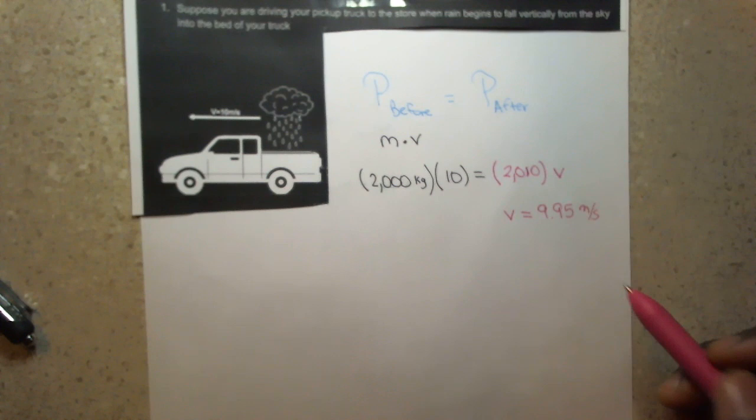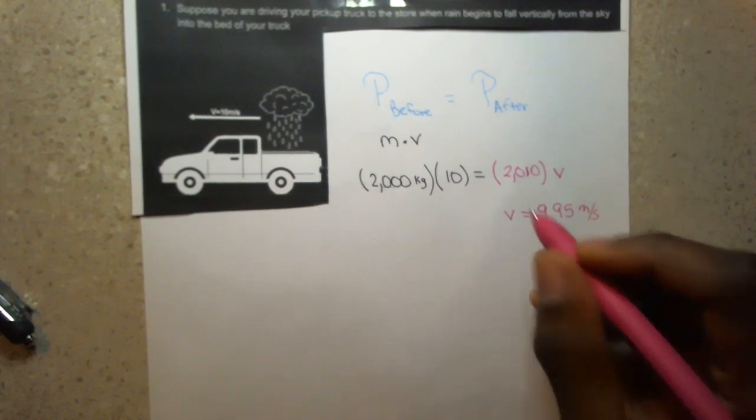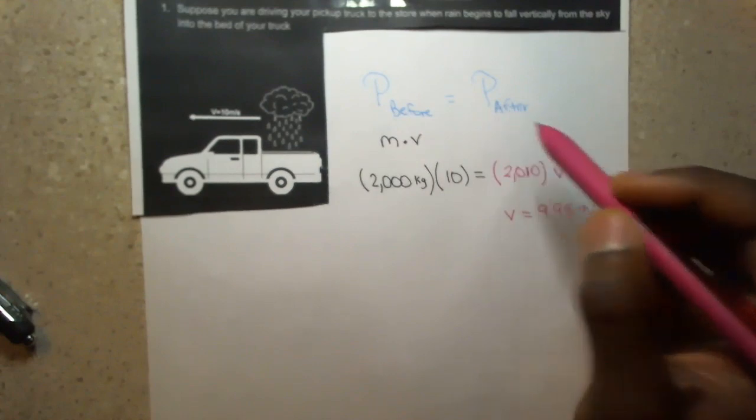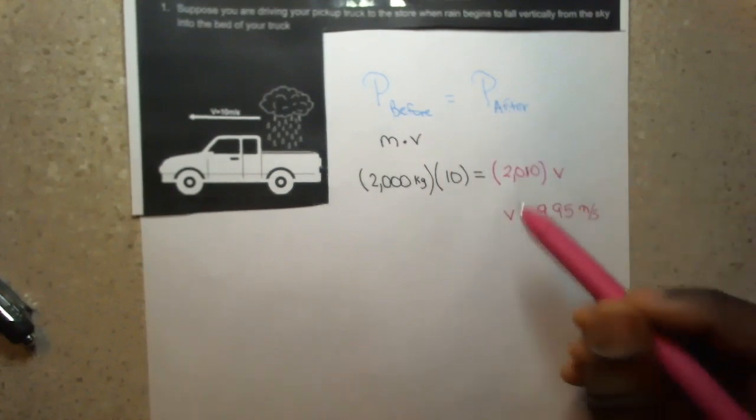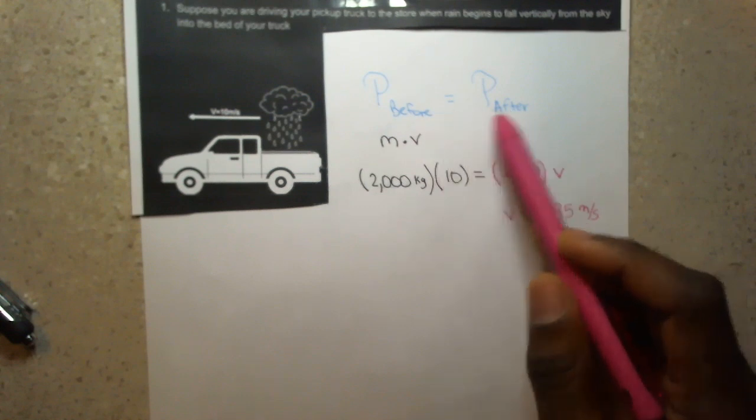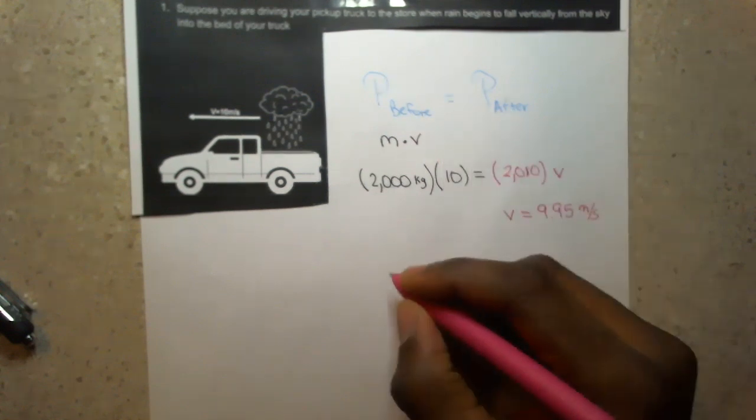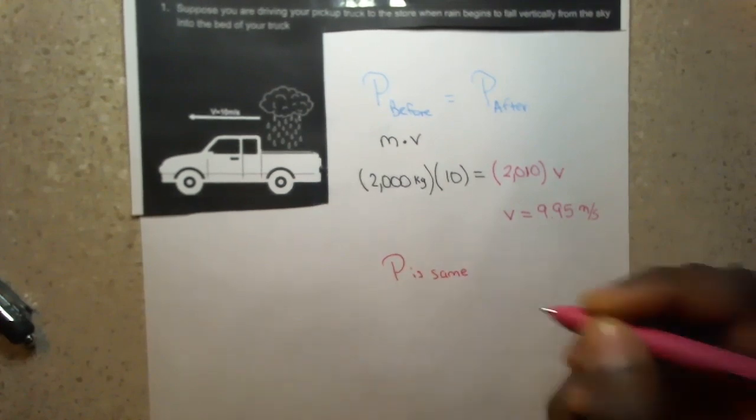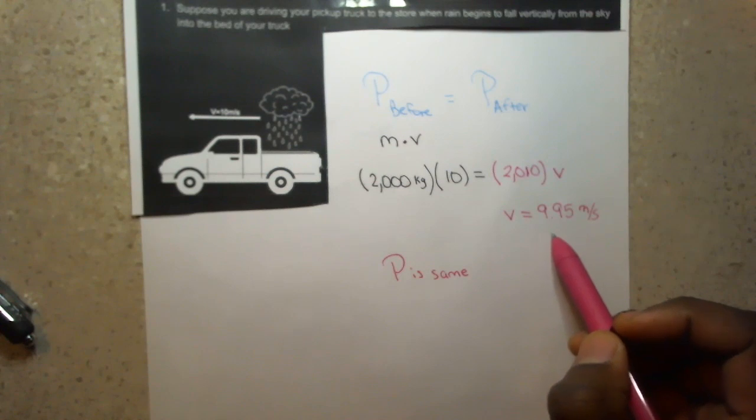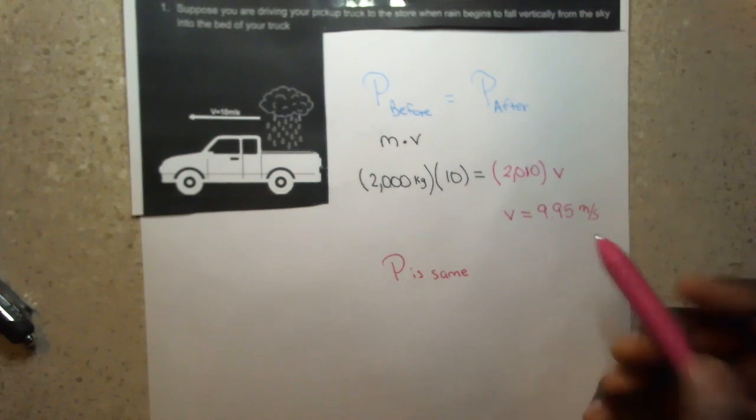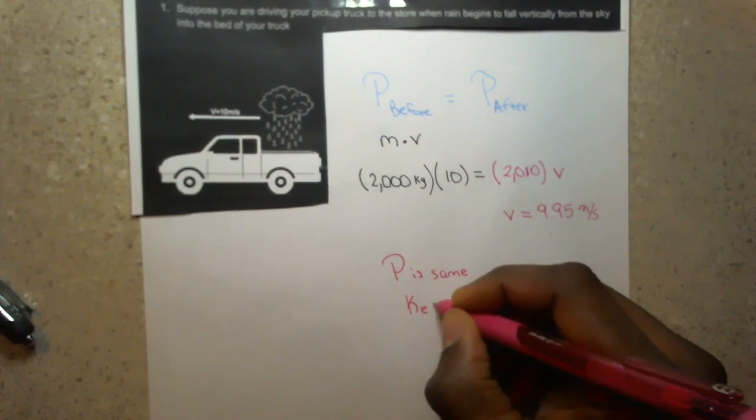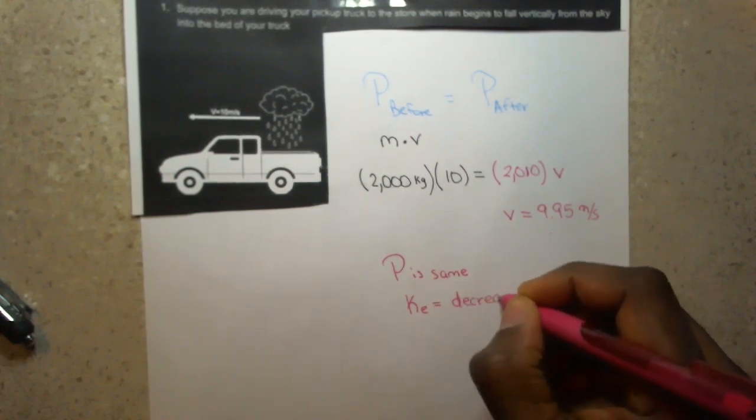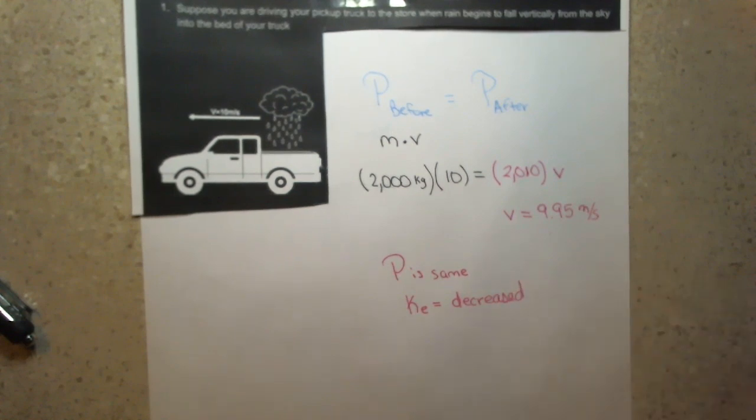From what we know about momentum, momentum's always conserved. Momentum before equals momentum after. So the momentum of the system has to be the same. It never changes. Momentum is conserved. But the velocity has decreased. And since the velocity has decreased, KE, energy related to motion, has to have decreased. Hopefully that helps.